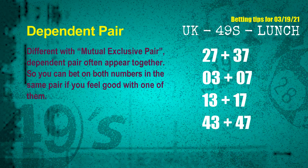Some numbers are mutual exclusive, while some are dependent. In the same dependent pair, you can bet on both, because they are often drawn in one draw. The dependent pairs for the next draw are: 1st pair 27 and 37, 2nd pair 03 and 07, 3rd pair 13 and 17, 4th pair 43 and 47.